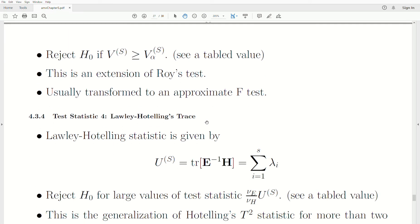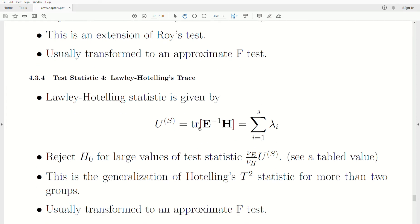Now, Lawley and Hotelling's trace, this statistic is given by this. So, again, it's the trace of this matrix product, and as we remember, the trace is the sum of the eigenvalues associated with this matrix. We reject for large values of this statistic. Now, there's tabled values of the critical regions. But, again, it's pretty complicated and you have to have a table to do it.